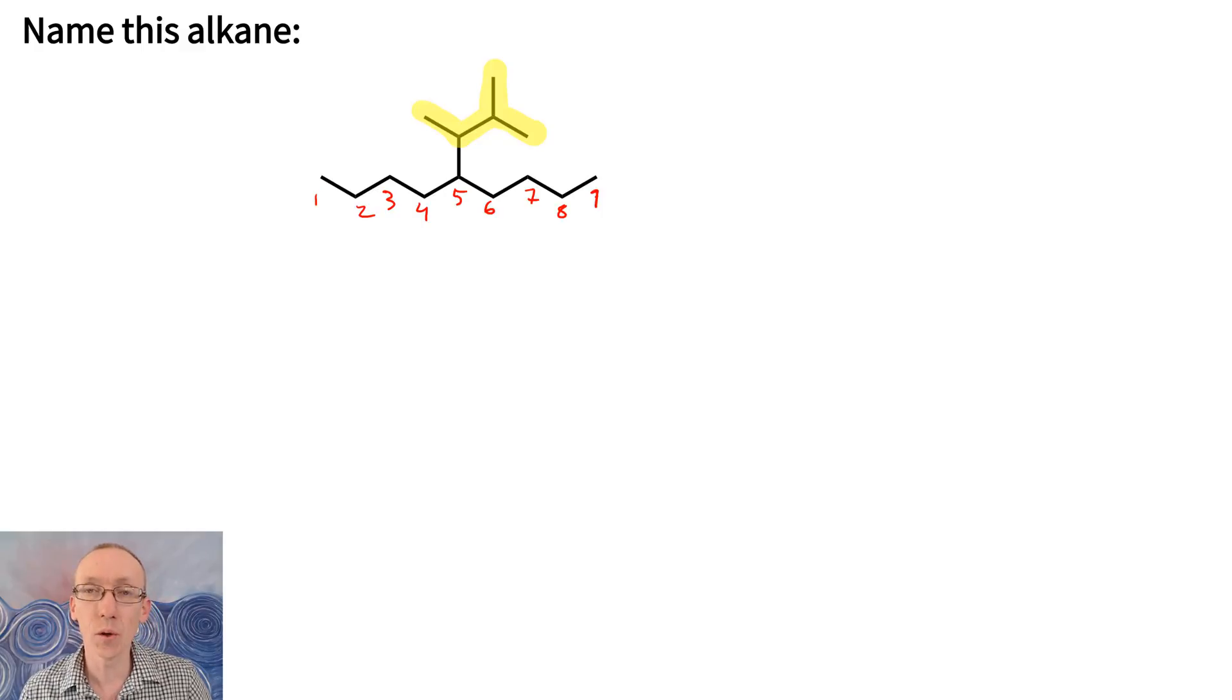Well firstly we look for the longest chain within that substituent, a bit like treating the substituent like its own alkane. Now we look for the longest chain within that substituent. So let's get rid of that yellow coloring there and number this.